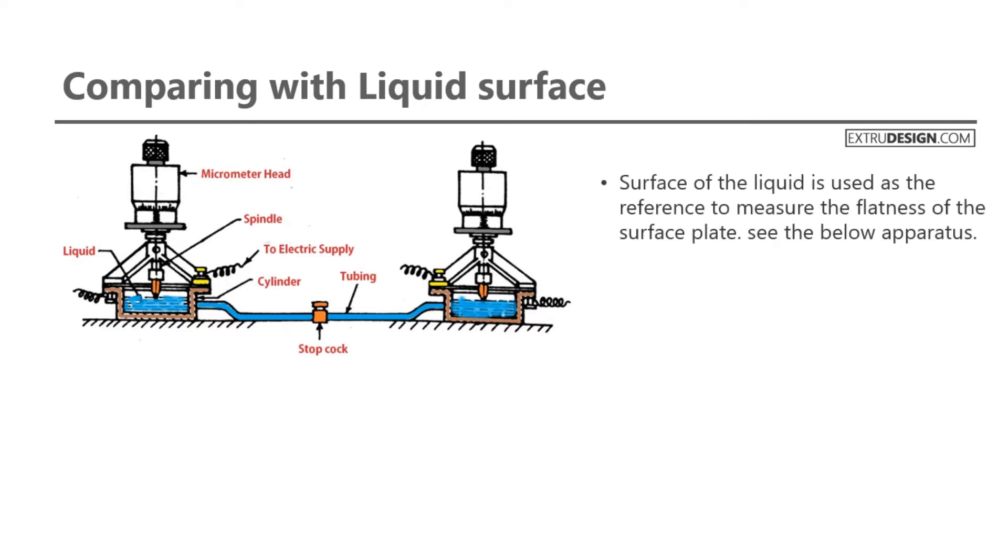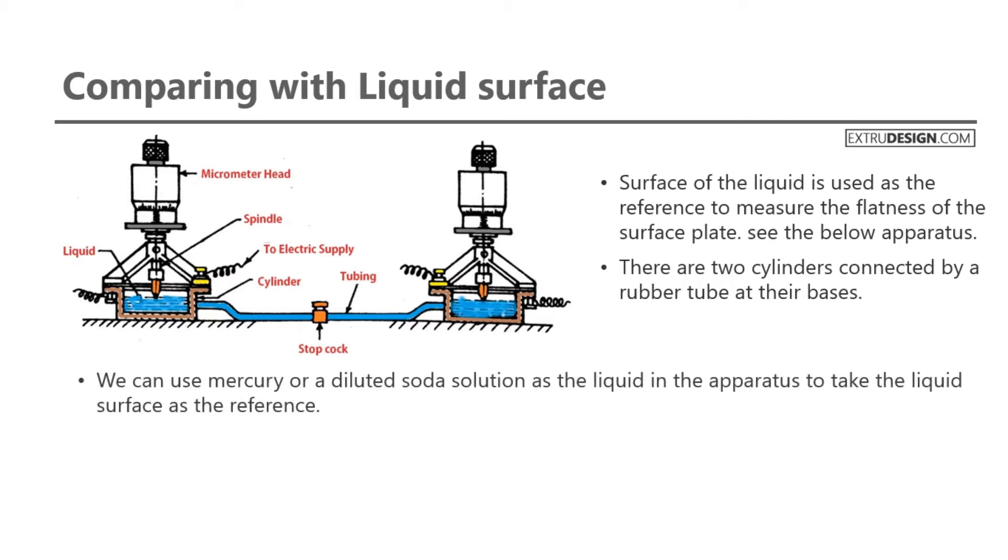Surface of the liquid is used as the reference to measure the flatness of the surface plate. There are two cylinders connected by a rubber tube at their bases. We can use mercury or a diluted soda solution as the liquid in the apparatus to take the liquid surface as the reference.